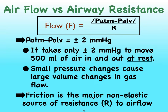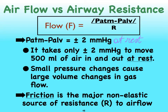Remember in the blood vessel chapter, you learned the formula for blood flow. The formula for airflow is identical, except that pressure A and pressure B is represented by the pressure in the atmosphere versus the pressure in the alveoli — we subtract these pressures and divide by the peripheral resistance. The difference in atmospheric pressure and alveolar pressure, at rest, is going to always be approximately two millimeters of mercury.